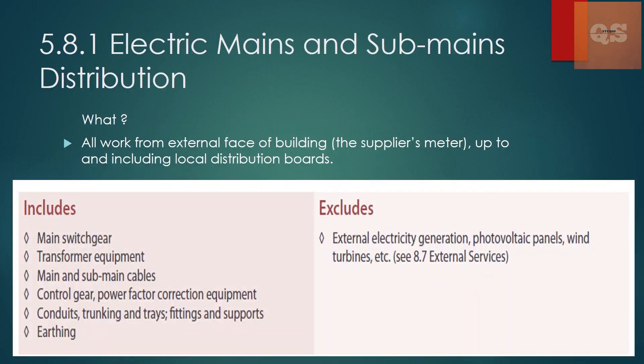The first section under 5.8 is 5.8.1 — Electrical Mains and Sub-Mains Distribution. This covers all works from the external phase of the building up to and including the distribution boards. It includes different equipment such as switchgear and transformers, cables from the main source to equipment, and conduits and trunking through which the cables move. Exclusions include external items like photovoltaic panels and wind turbines, which are covered under section 8.7 for external services.